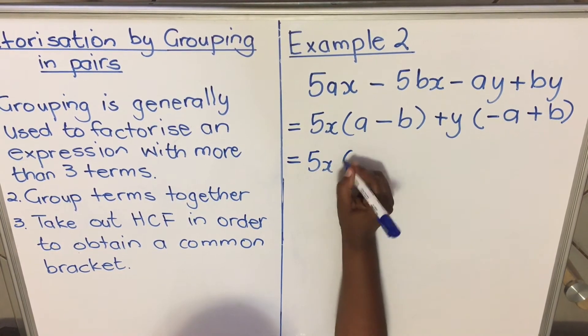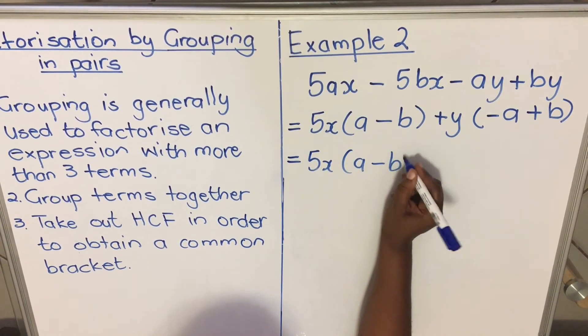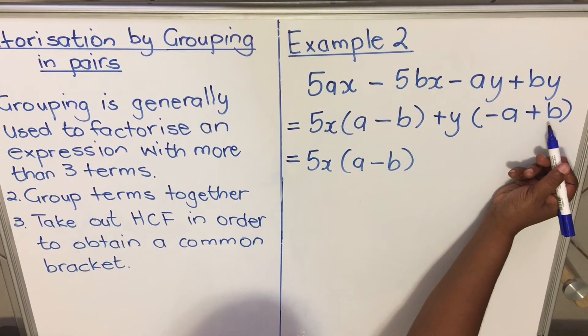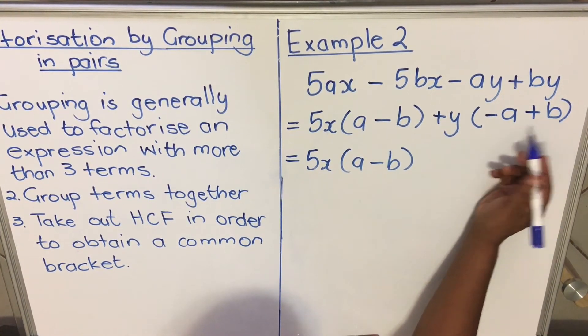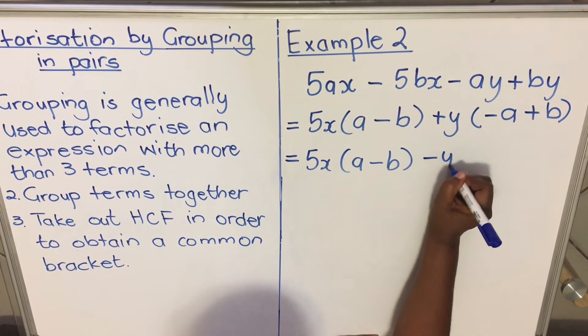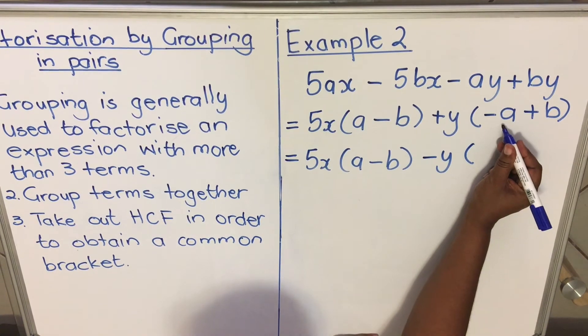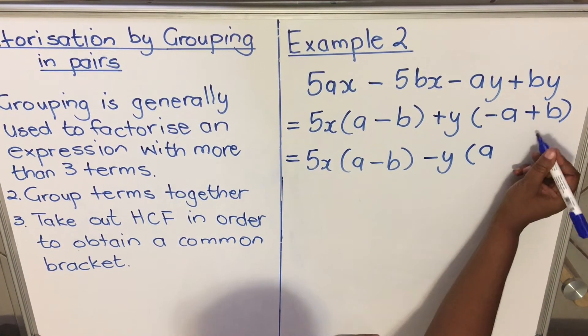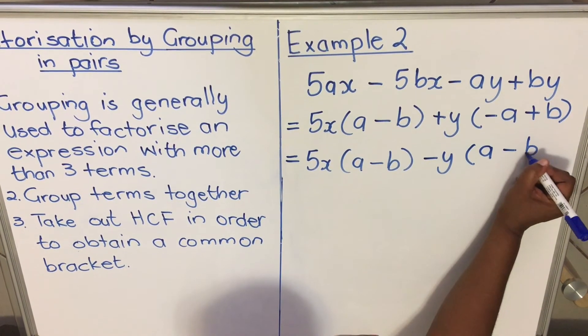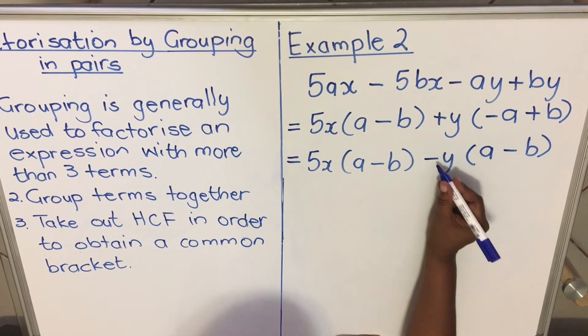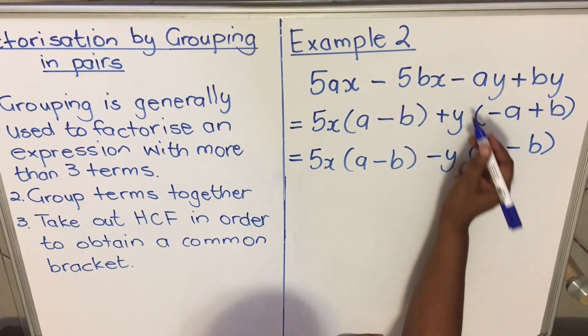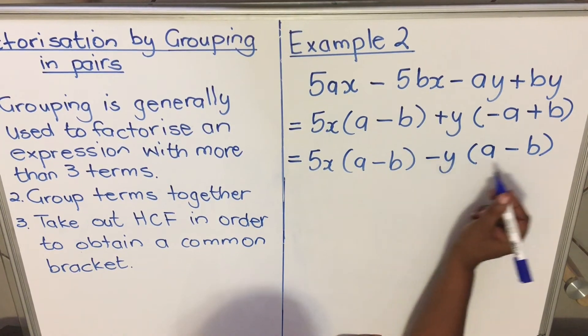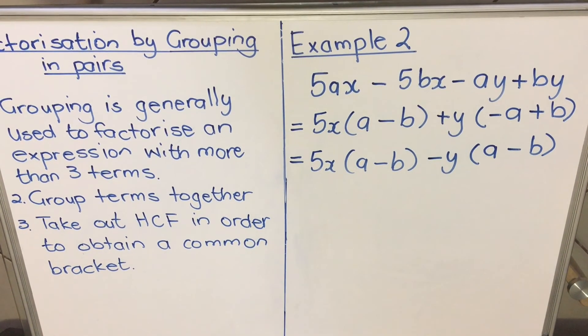Now here you take out a common factor of minus 1, so you'll have minus y and then your a will be positive and your b will be negative because you took out the common factor of minus 1. Minus times positive gives you minus a, and negative times negative gives you positive b.